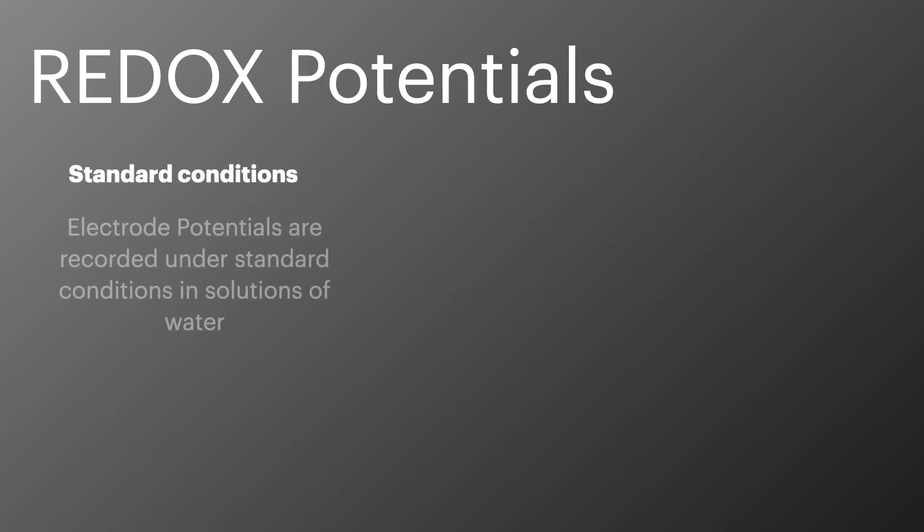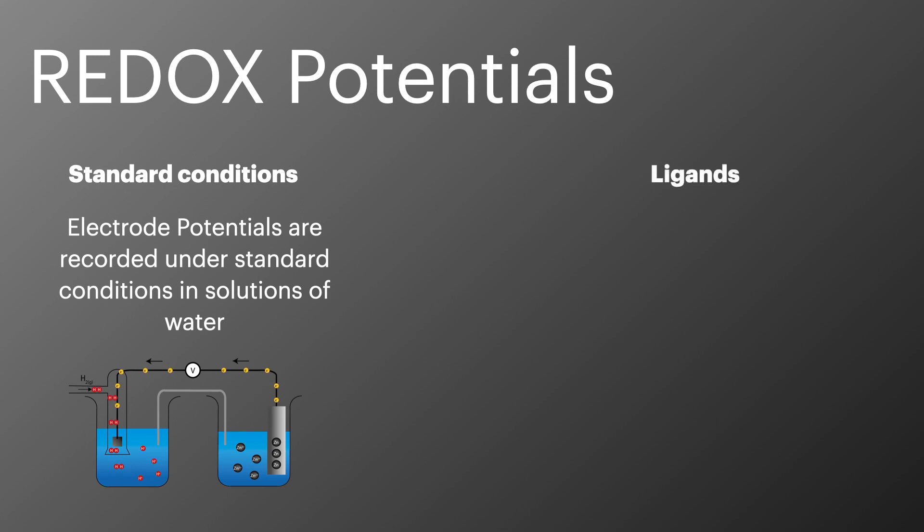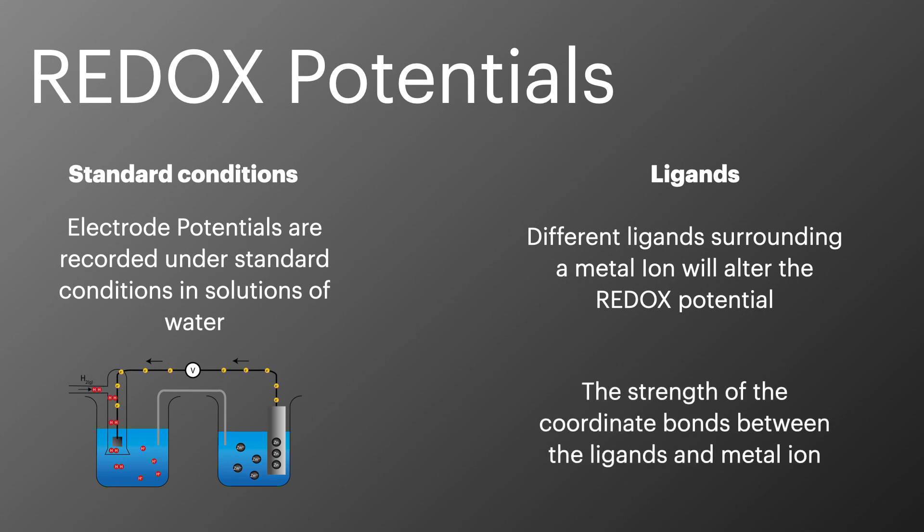Electrode potentials always require us to understand the conditions. This importantly has the metal ion dissolved in aqueous solution so they're surrounded by water ligands. If we change the water ligands we'll also change the redox potential and then it's influenced by the strength of the coordinate bond between the ligand and the metal ion.